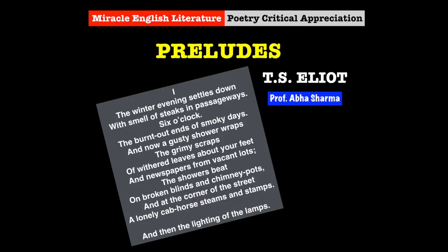He divides the poem into four little poems, giving the different sequences of a single day. In his first part, Eliot gives the image of a winter evening.